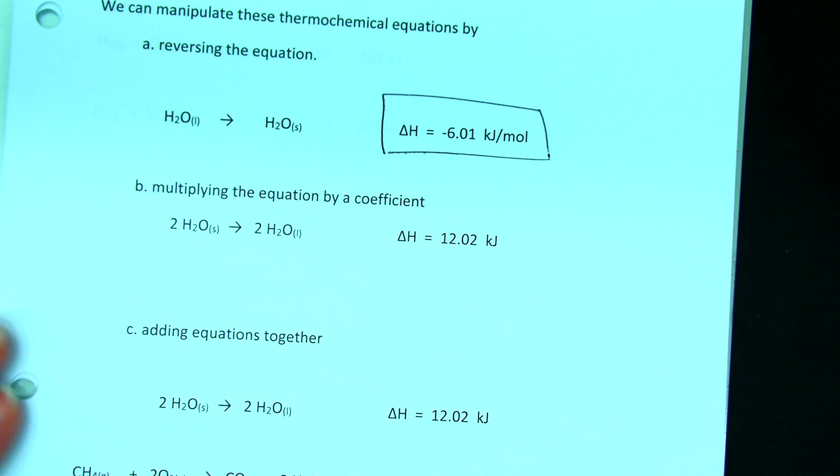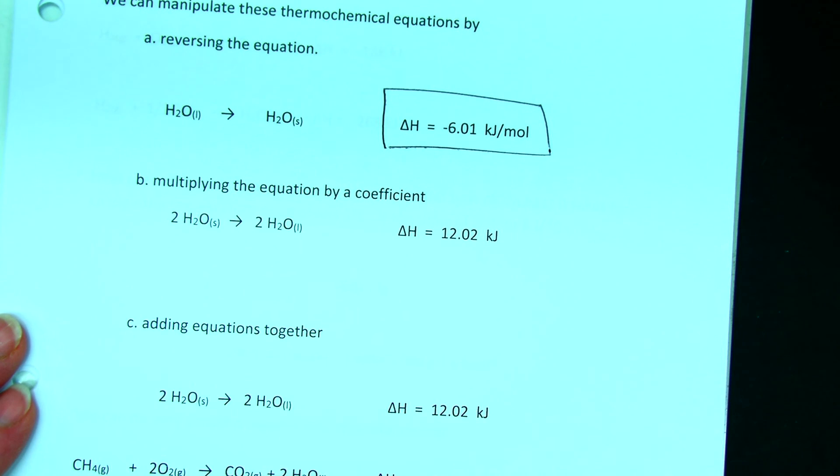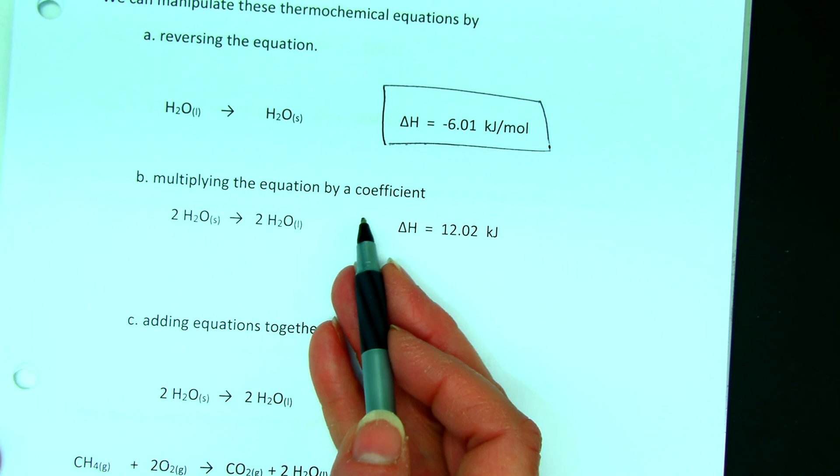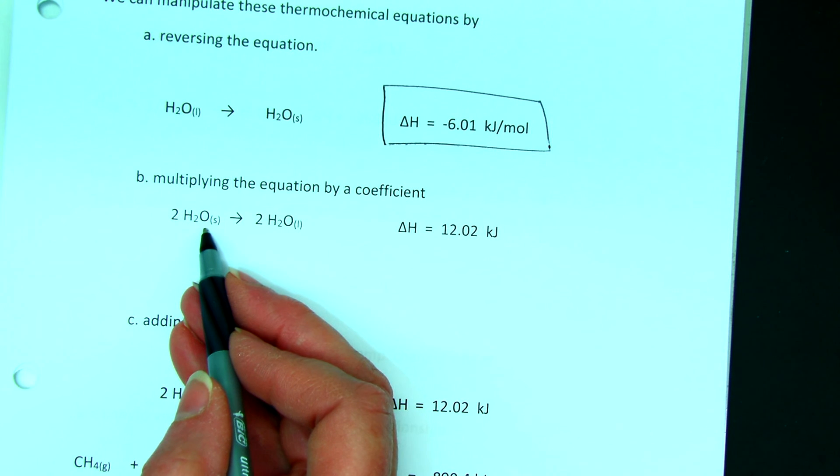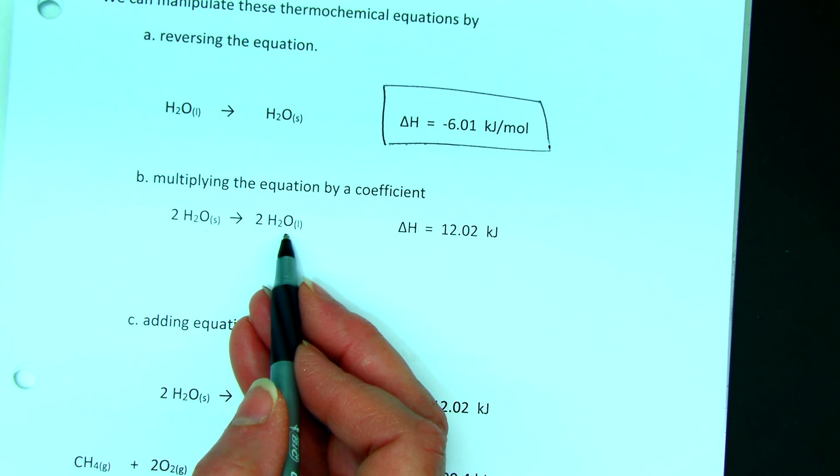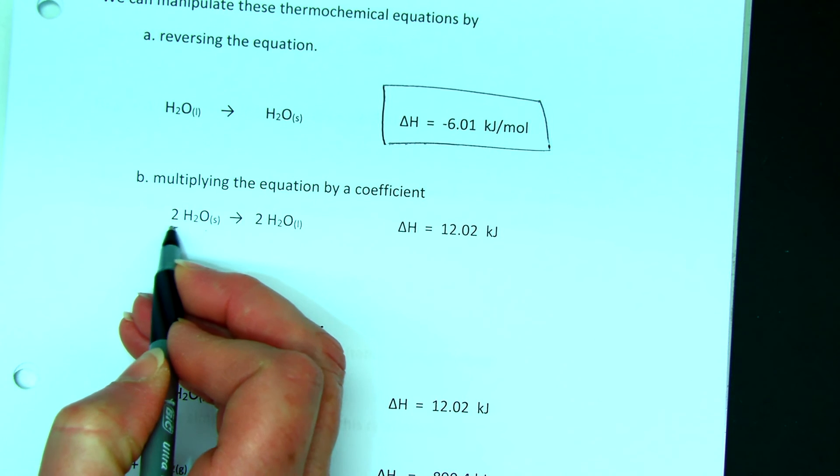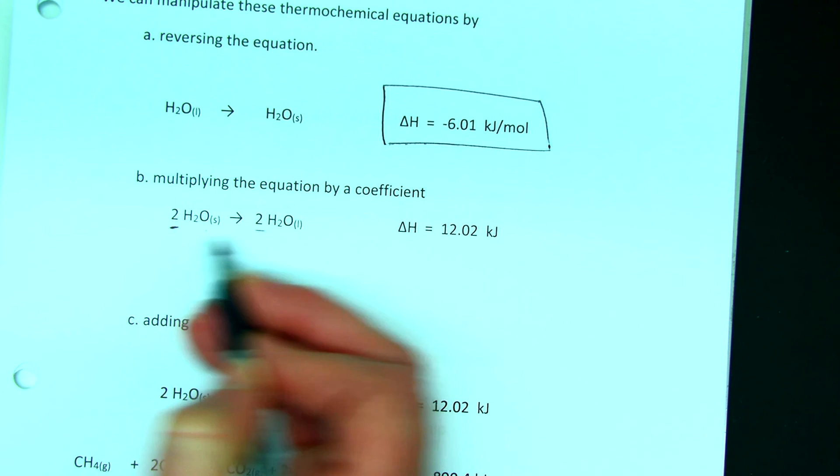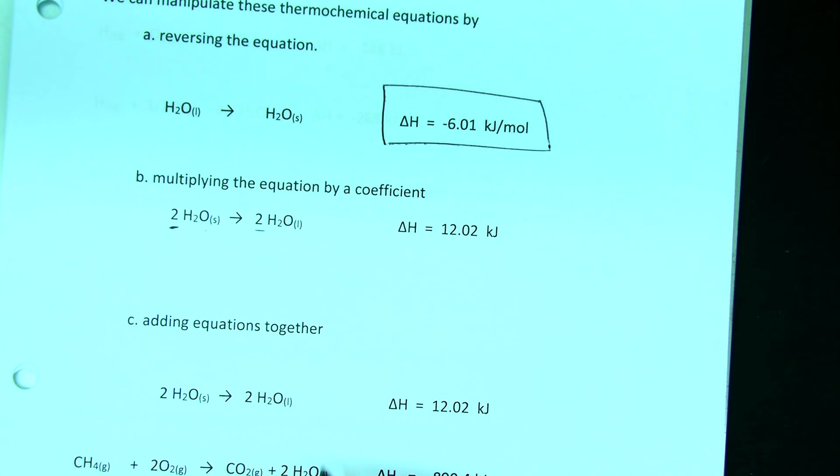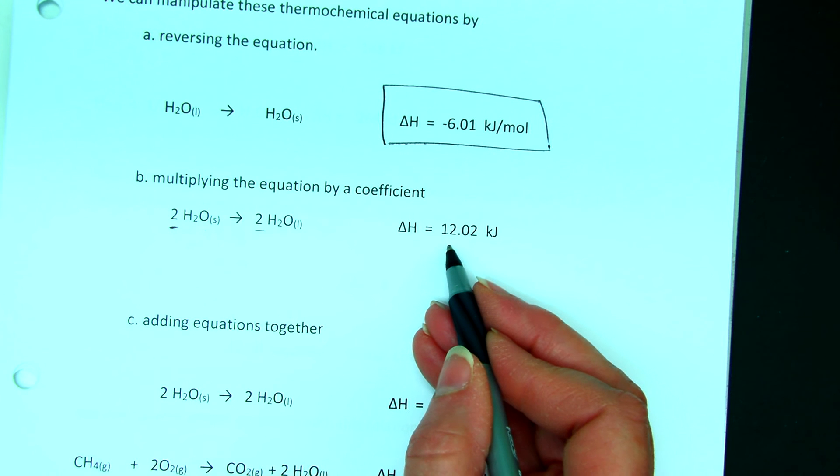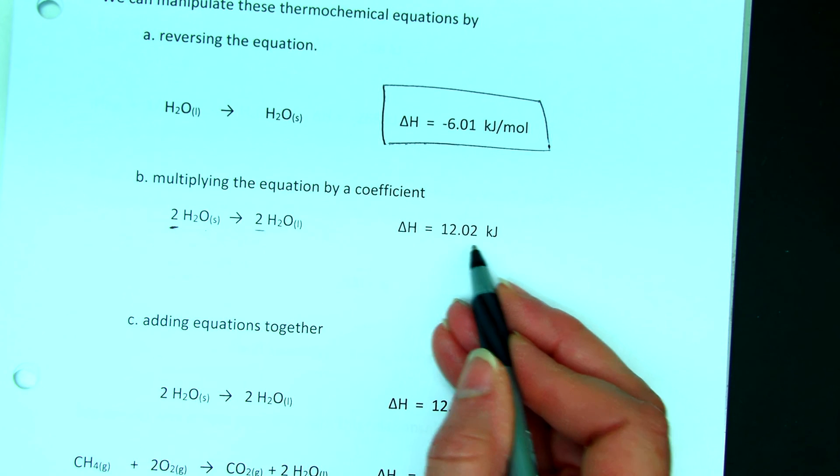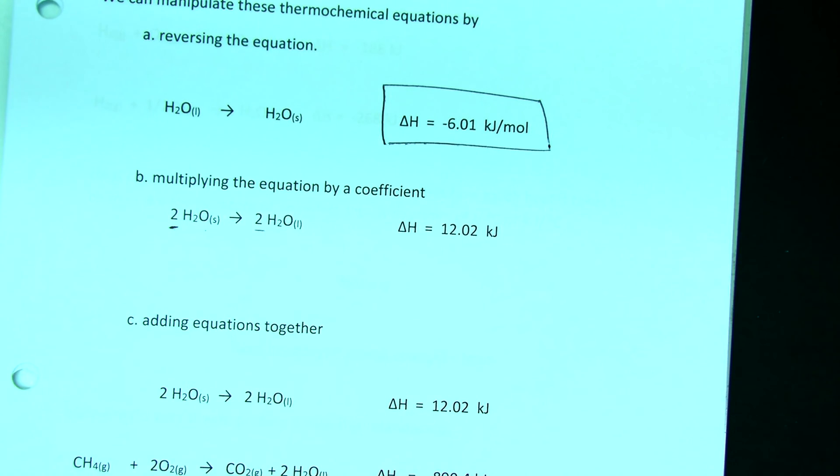We can also take that original equation, and I can multiply it by a coefficient. So instead of having one mole of solid water making one mole of liquid water, I multiplied by 2. So I now have 2 moles and 2 moles. And when I do that, I multiply the enthalpy value by the same number. So I multiplied my enthalpy by 2, and I now have 12.02 kilojoules for 2 moles of water.